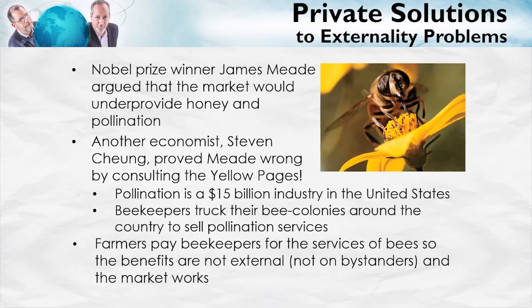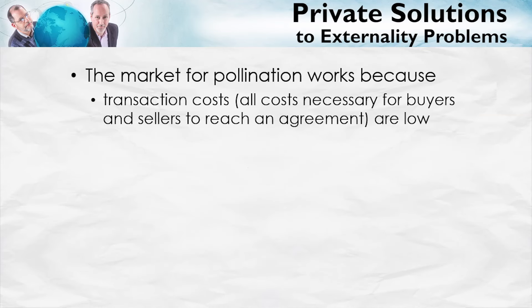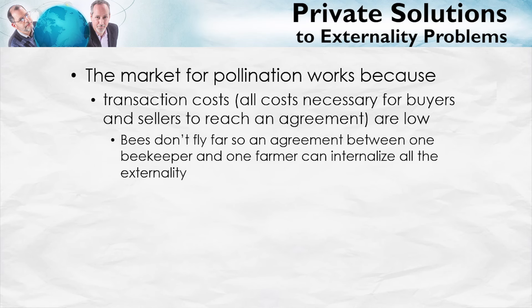So why did Mead get it wrong? What about the bees and what about the farmers made it possible for this externality problem to be solved by markets, when many other externality problems are not? The market for pollination works, despite the fact that bees seem to create this external benefit, because transactions costs are low. That is, all of the costs necessary for buyers and sellers to reach an agreement are low. So, in particular, bees simply don't fly very far.